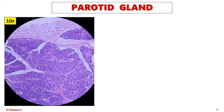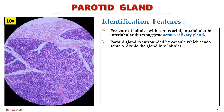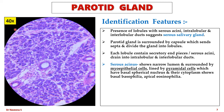Let us see the slides of salivary glands. Parotid gland — here is the slide seen under low magnification. It is identified by the presence of lobules with serous acini, intralobular and interlobular ducts, which suggest a serous salivary gland. Parotid gland is surrounded by a capsule which sends septa into the parenchyma and divides it into lobules. Each lobule contains secretory end pieces, which are serous acini, and they drain into intralobular and interlobular ducts. Let us observe the serous acini under high magnification. Serous acini show narrow lumen and are surrounded by myoepithelial cells. Each serous acinus is lined by pyramidal cells which have a basal spherical nucleus, and the cytoplasm shows basal basophilia and apical eosinophilia because of the presence of zymogen granules.